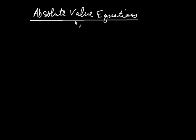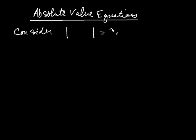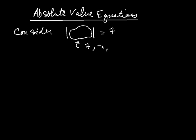Let's talk about solving absolute value equations. An absolute value equation is simply an equation with an absolute value in it. Consider this idea: if you take the absolute value of something and it equals 7, there are only two possibilities for what's inside — either 7, because the absolute value of 7 is 7, or negative 7. If you put a 7 or a negative 7 in there, you get a true statement because the absolute value of either is positive 7. So let's take that logic and solve an absolute value equation.